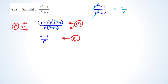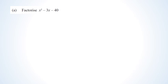That's question one done. Moving to question two: we've been asked to factorize the quadratic. We're looking for two numbers that multiply to negative 40 and add up to negative 3. The only combination is negative 8 and positive 5. That is an achieved question.